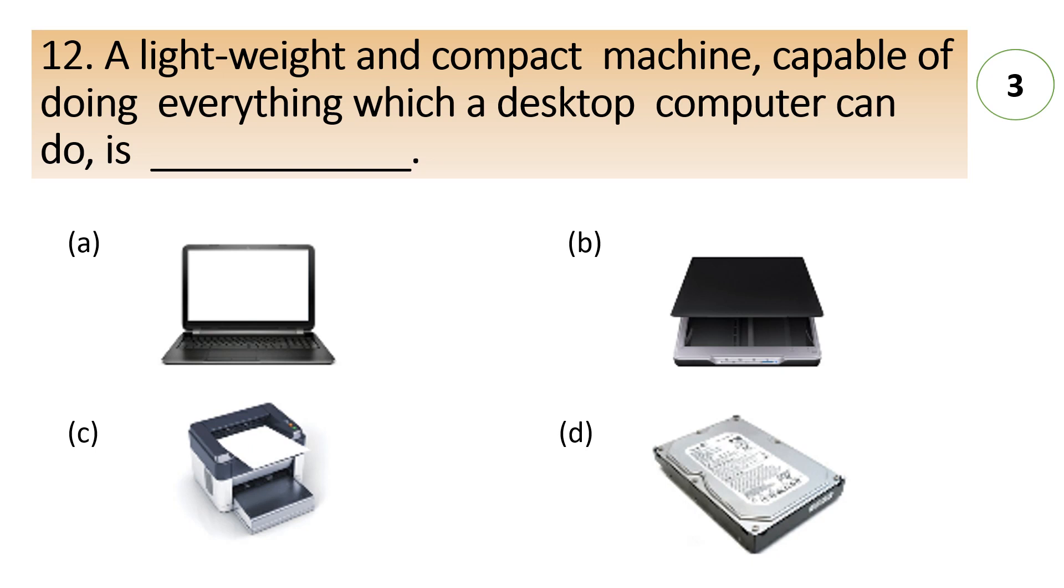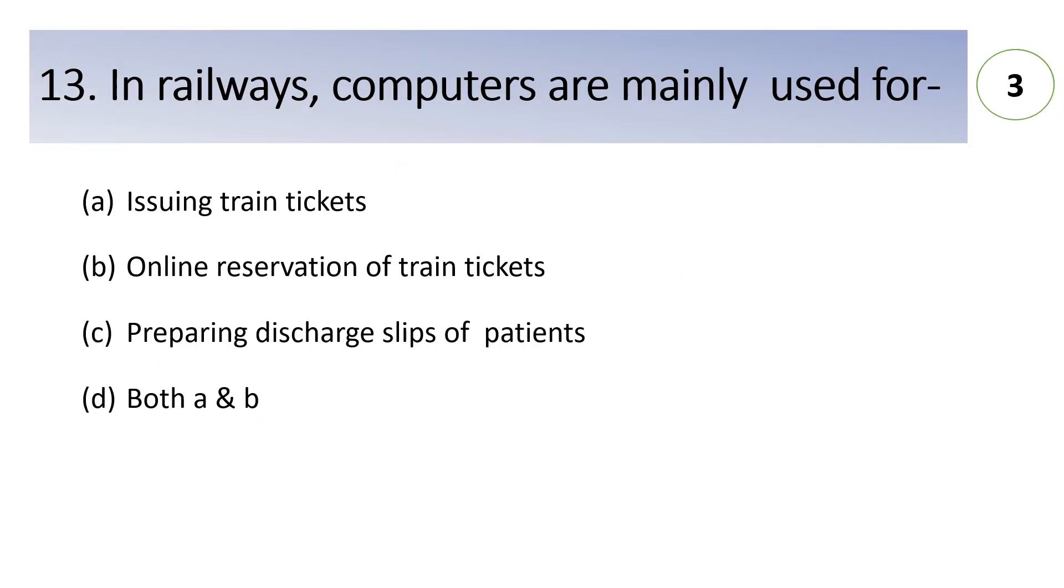In railways computers are mainly used for A. issuing train tickets, B. online reservation of train tickets, C. preparing the chart slips of patient, D. both A and B. Answer here is D. both A and B. Computers are used for issuing tickets as well as online reservations.